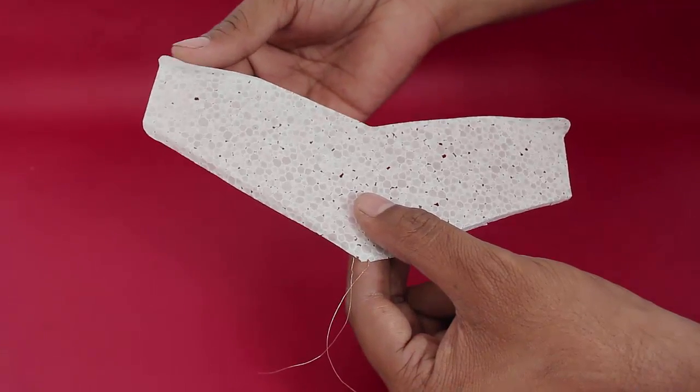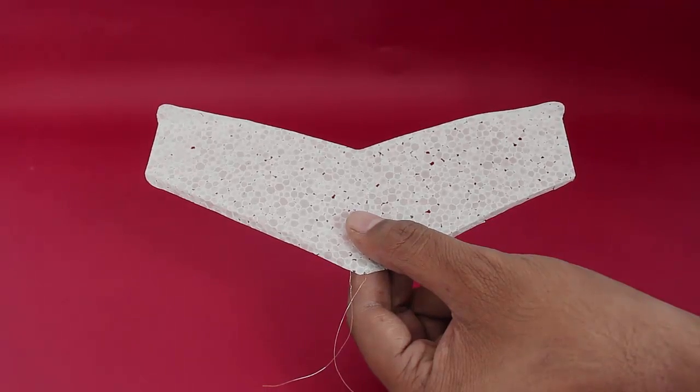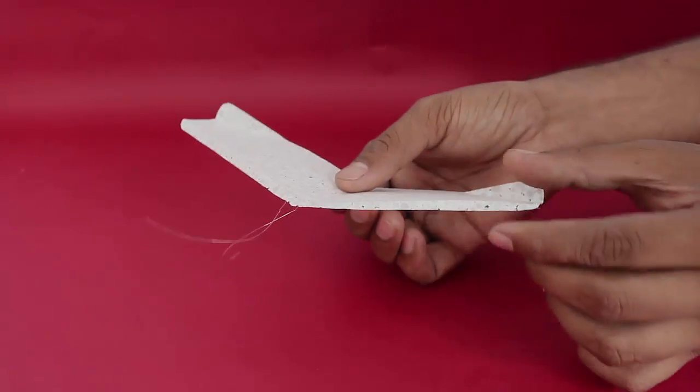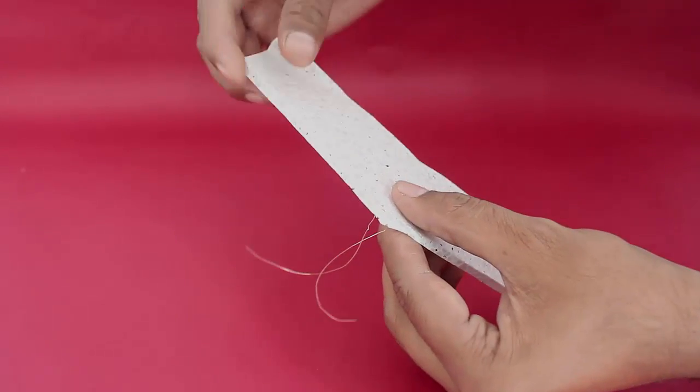You can see the ailerons, one and the second one. And this is the camber pointing downwards.